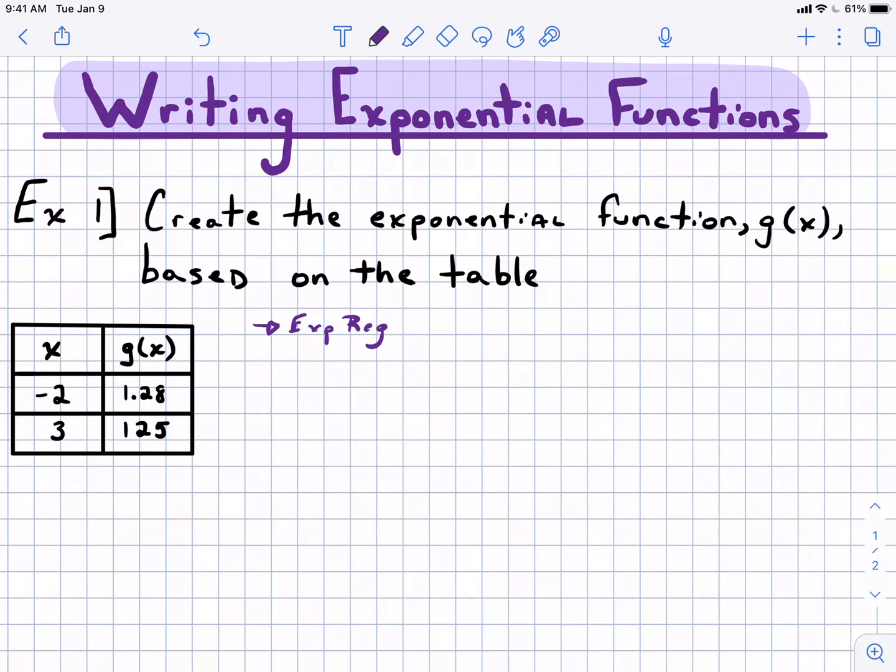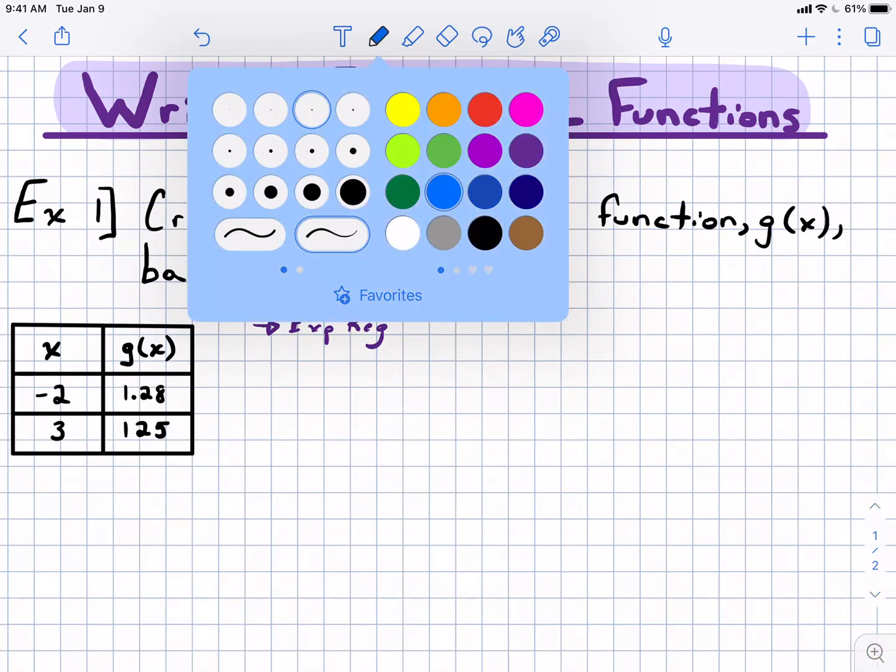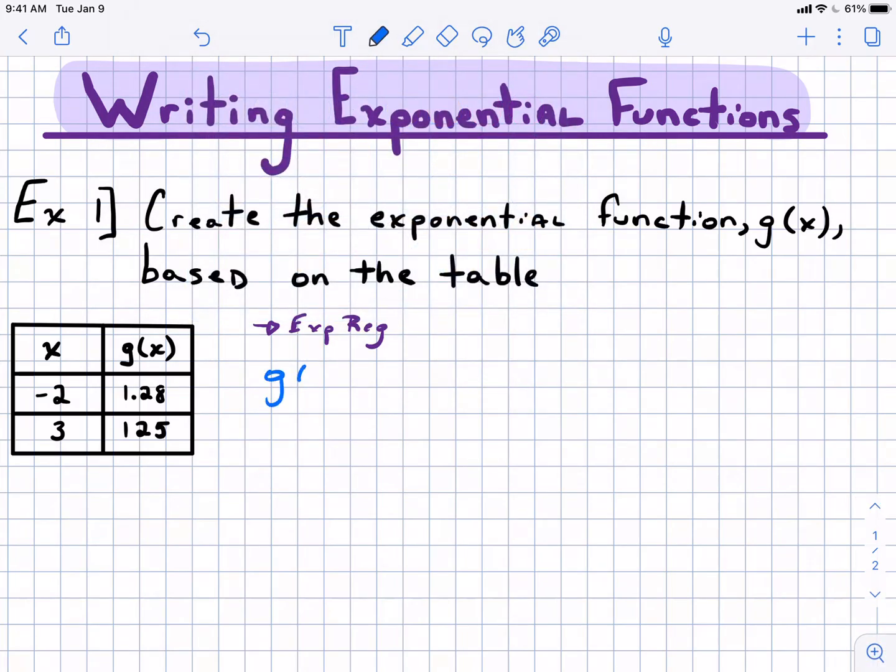Feel free to explore all those options, but anyway let's get started. They are nice enough to tell us here it is exponential. If it just says create a function, we don't know if it's linear, we don't know what it is. Since we only have two points, we know this is exponential. What I'm gonna do first is write the generic version of it: a times b to the x power.